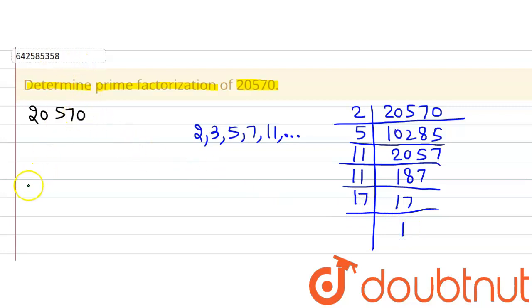20,570 can be written in the form of prime factorization as a product of its prime factors. So we will write this as 2 multiplied by 5 multiplied by 11 multiplied by 11 multiplied by 17. And this is what we were supposed to do in this question.